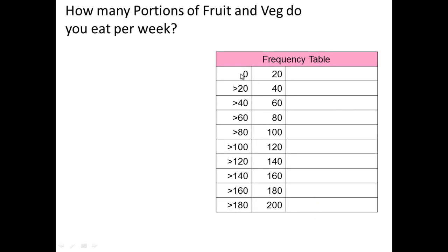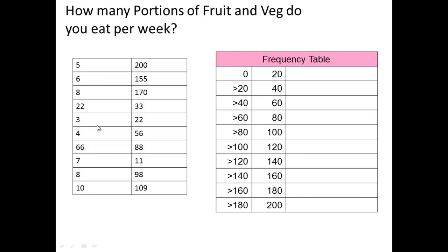Our smallest number was 3, so we start with 0 and go up in 20s: 0 to 20, greater than 20 to 40, greater than 40 to 60, and so on. The main thing to make sure is there's no overlap between intervals. For example, if somebody ate 20 portions, would they go here or here? In this setup, 20 goes in the 0–20 category; the next category is greater than 20.